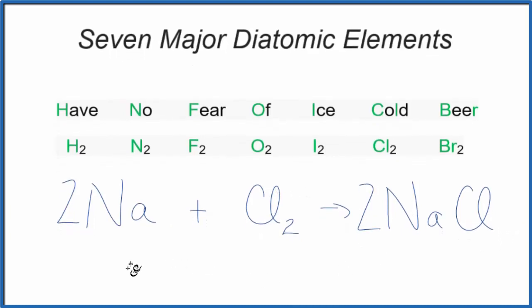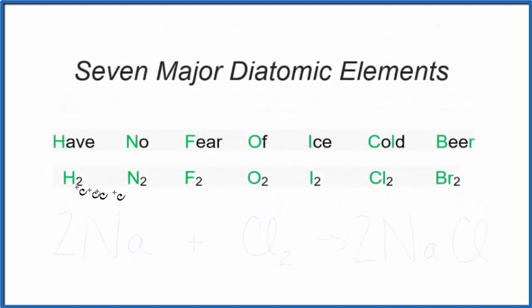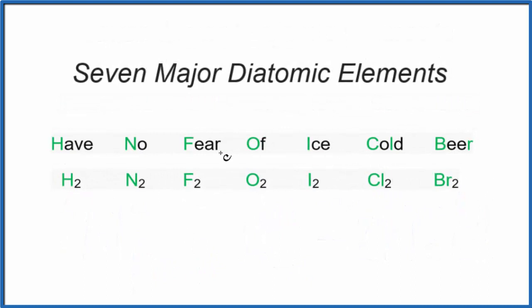Note we also have monatomic elements, like helium. That'll always just be He. It's a noble gas. Argon, another noble gas. So these are monatomic. But the ones that we see quite often are these diatomic gases, because they're very reactive.